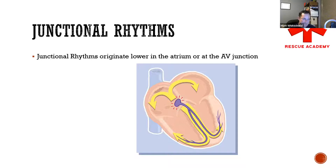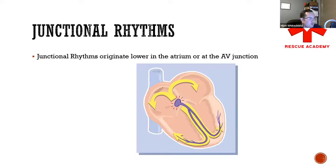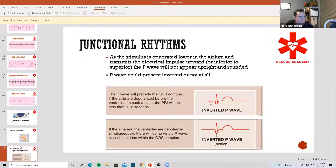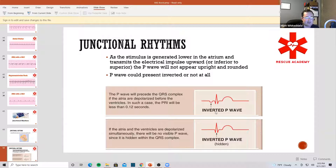And if there is a P-wave, it's going to be inverted or upside down. So this is all occurring at the AV node, right here in the middle. As a stimulus is generated lower in the atrium and transmits electrical impulse upward, the P-wave will no longer appear upright — it's either going to be inverted or there's going to be no P-wave.